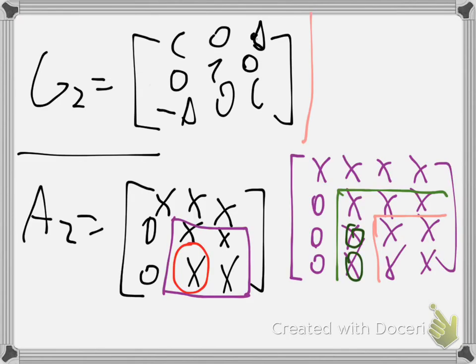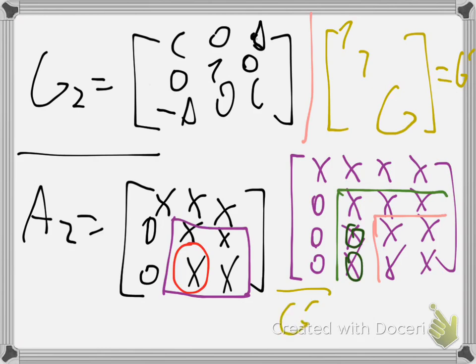The structure of the Givens Rotation won't change. But when you apply it to A, you will put ones in the diagonal for the rows/columns not in the sub-matrix, and then place your rotation block here. This will be the Givens Rotation that you apply to A.